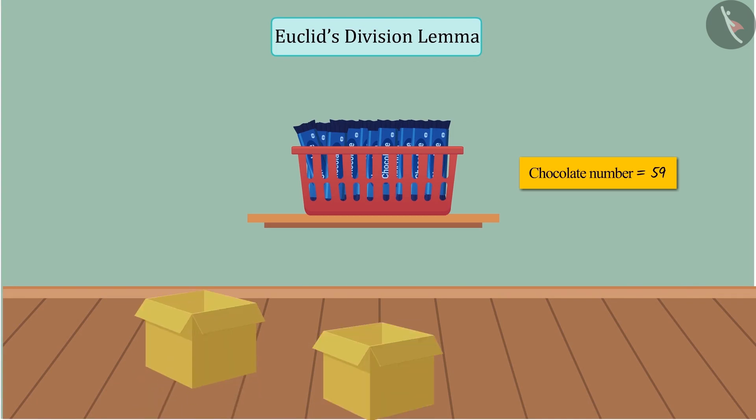We have 59 chocolates and 3 boxes. We have to keep equal number of chocolates in all the 3 boxes. Can you keep an equal number of chocolates in these boxes?